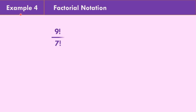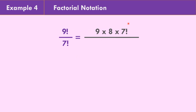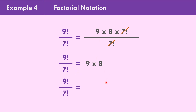How about example number 4: 9 factorial divided by 7 factorial? So 9 factorial is written as 9 times 8 times 7 factorial. Because we have 7 factorial in the denominator, and the equivalent of 7 factorial is 7 times 6 times 5 times 4 times 3 times 2 times 1, we can cancel the 7 factorial. That leaves 9 times 8, and 9 times 8 equals 72. So 9 factorial divided by 7 factorial equals 72.